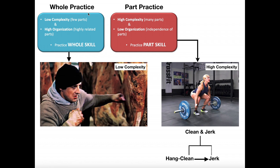So to recap: whole practice means you practice the whole skill, and it's usually done for very low complexity movements like discrete tasks, like a jab. Part practice is done when you can isolate different parts of the movement and practice those independently — like practicing the hang clean separately from the jerk. But it's always good to bring those parts back together and do the whole skill, because in real life, if you were in an Olympic lifting competition, you're going to have to do the whole skill.